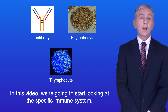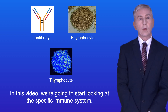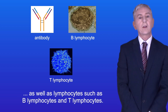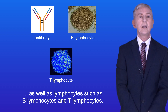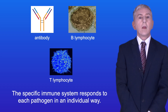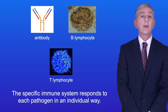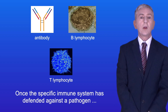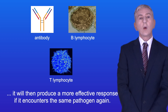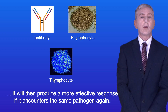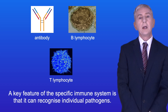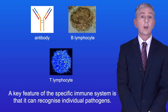In this video, we're going to start looking at the specific immune system. This specific immune system includes antibodies, as well as lymphocytes such as B lymphocytes and T lymphocytes. It responds to each pathogen in an individual way, and once it has defended against a pathogen, it will produce a more effective response if it encounters the same pathogen again. A key feature of the specific immune system is that it can recognize individual pathogens.